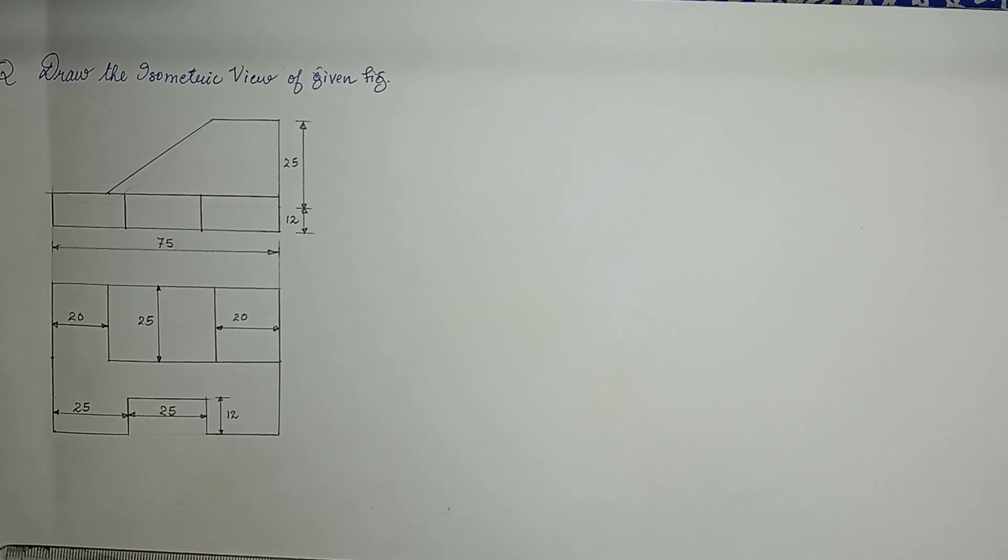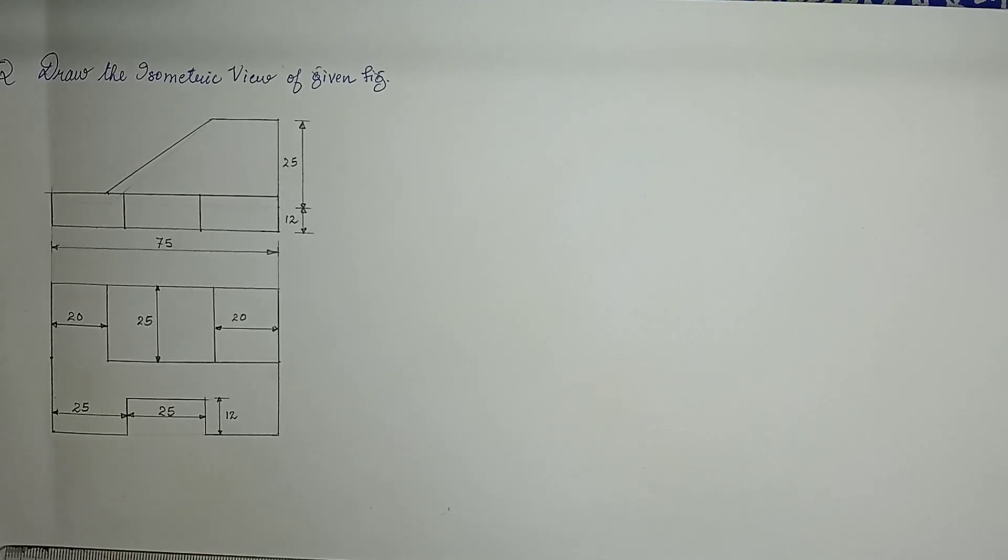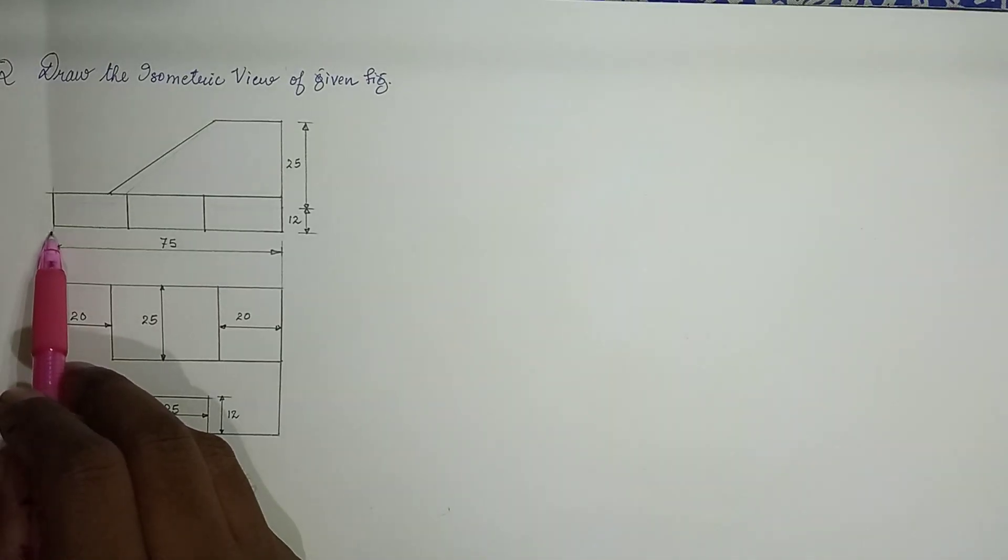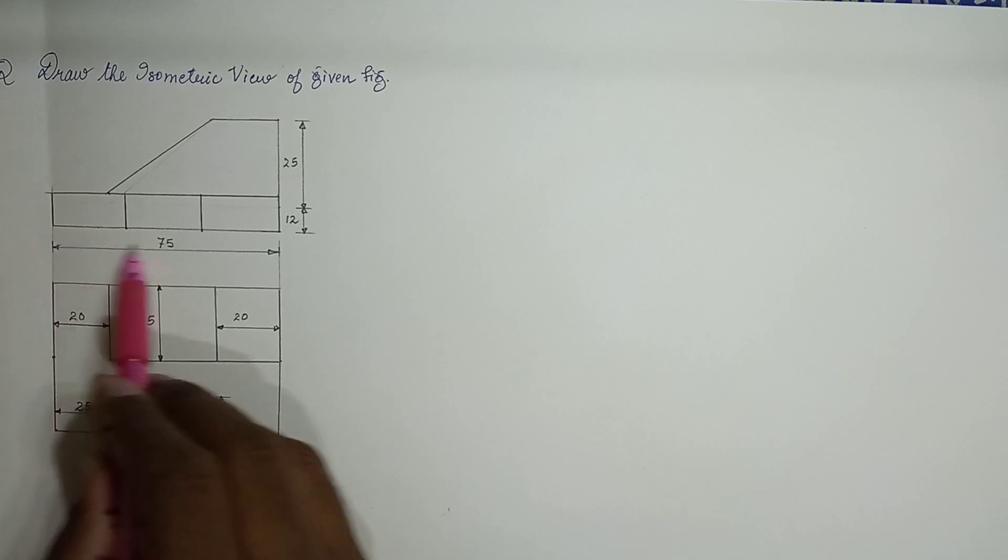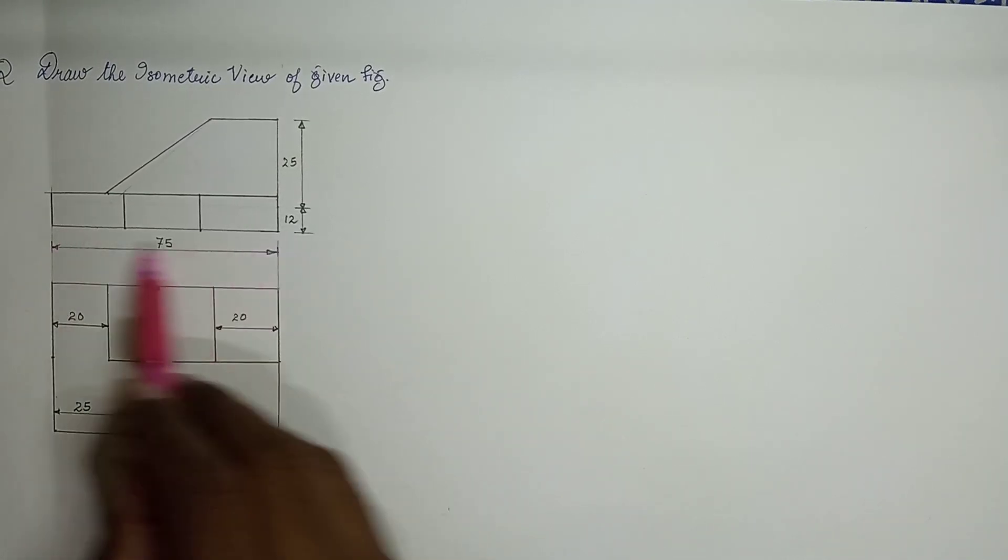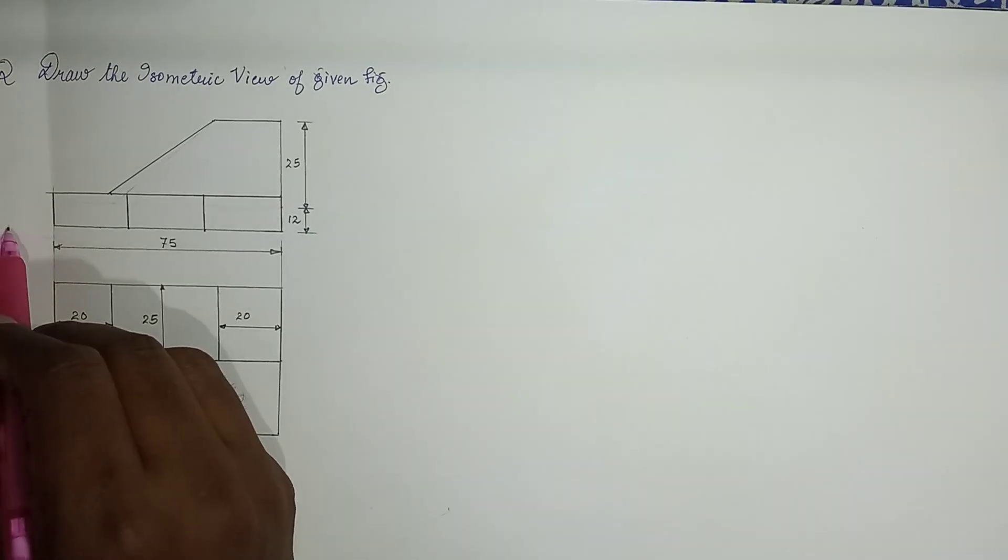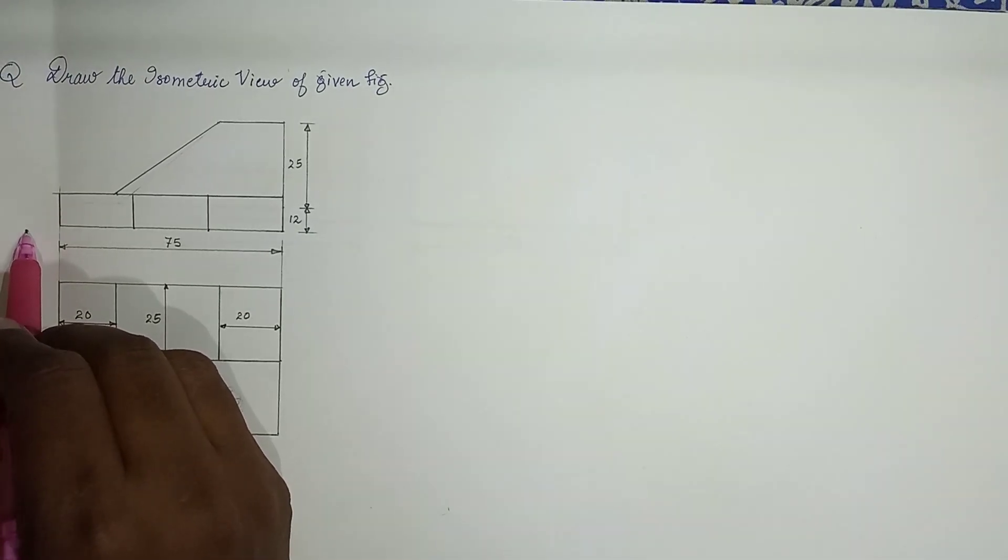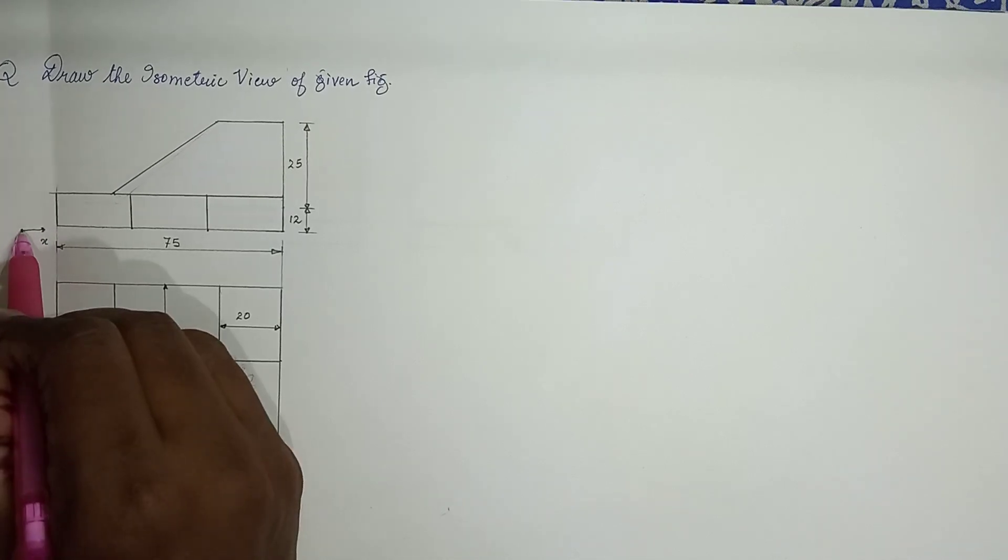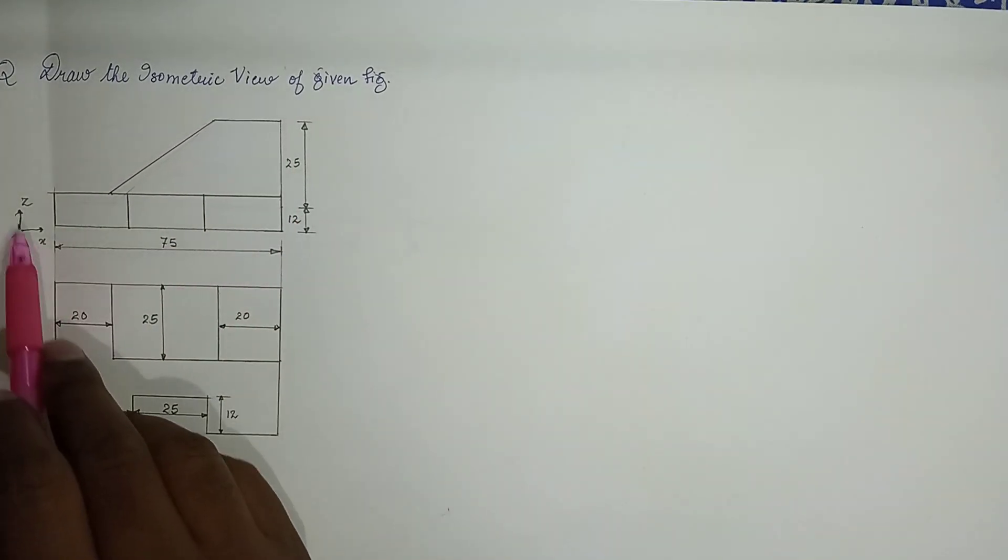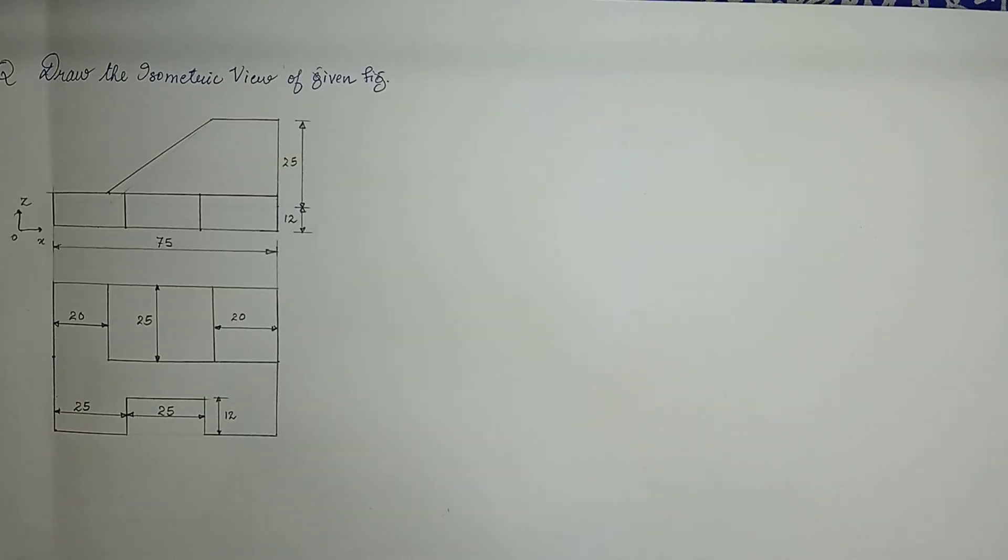The very first is we have to understand what details are given. The question itself is in the figure, so we have to analyze this figure. The bottom left corner we take as the origin. If this is O, this length is along the x-axis and this is along z. So this front view is in the x-z plane.